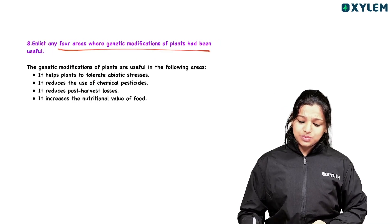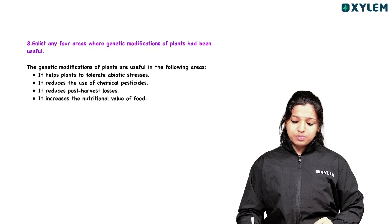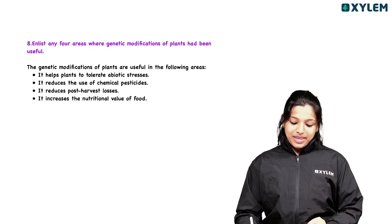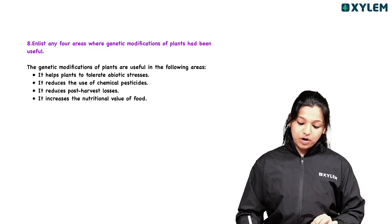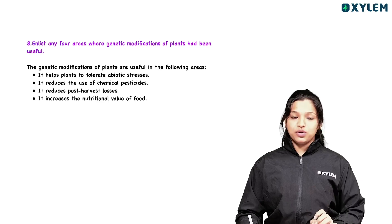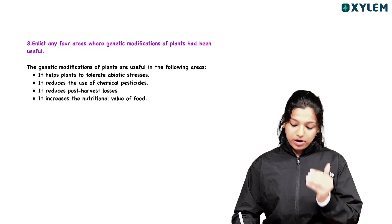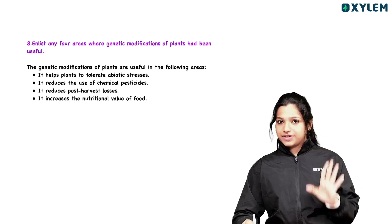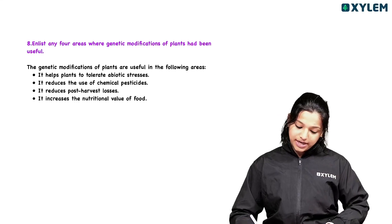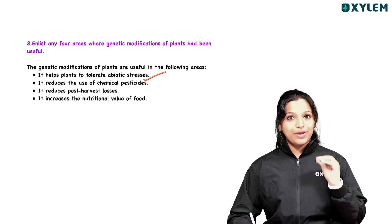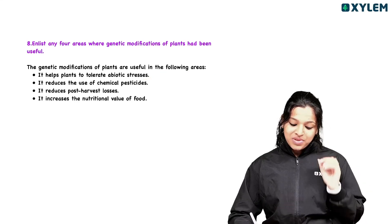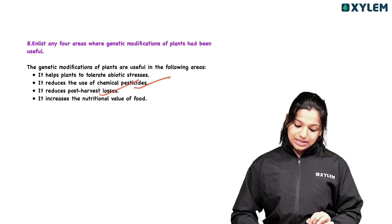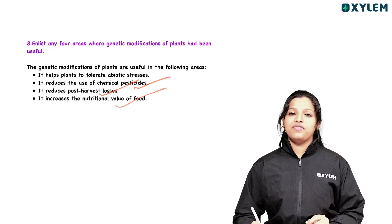Question seven: List any four areas where genetic modification of plants has been useful. Genetic modification of plants is useful in four areas: it helps plants tolerate abiotic stresses, reduces the use of chemical pesticides, reduces post-harvest losses, and increases the nutritional value of food.